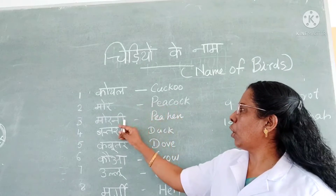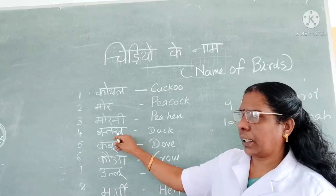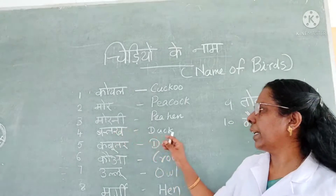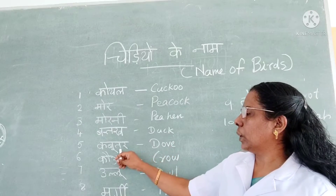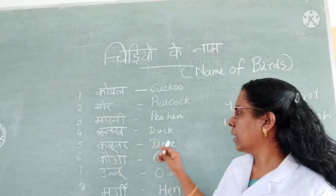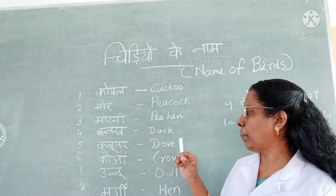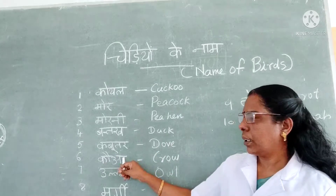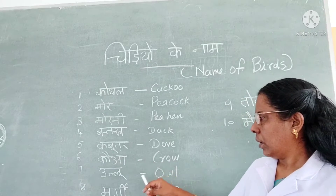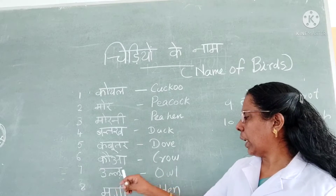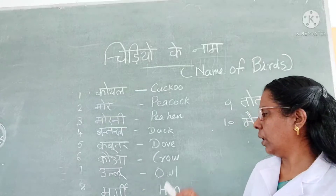Mor — peacock. Moorni — peahen. Then batak. Batak kya hai? Duck. And kabutar — dove. Kabutar — dove. Kawwa. Kawwa, you know — crow. Ulu. Ulu kya hai? Owl.